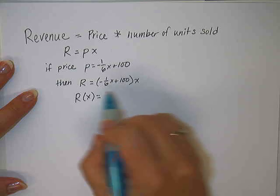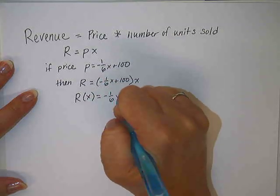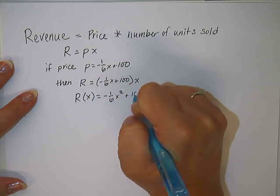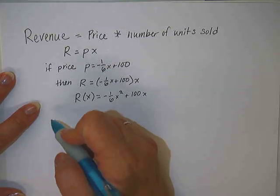R as a function of X, let's simplify this by multiplying it together, would be negative one-sixth X squared plus 100X. So there's our function for revenue.